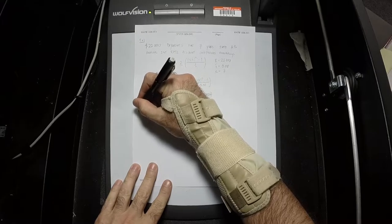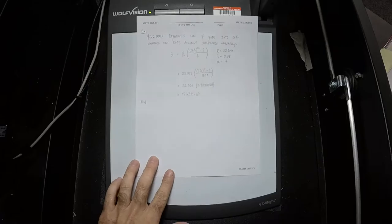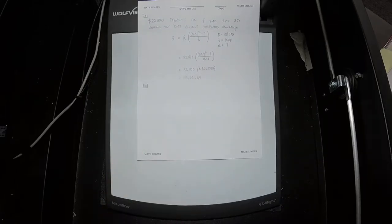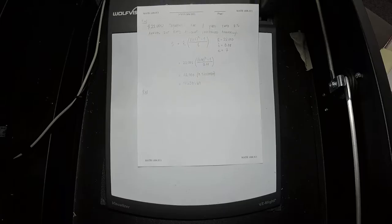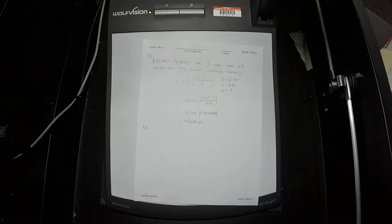Now we're going to work the problem in reverse. Suppose a child is born and you want to start an annuity for this child so that at the end of 18 years, when they reach the age of majority, they'll have $100,000. What terms of an annuity would be necessary for the annuity balance to be $100,000 at the end of 18 years? This is different from the previous problem.